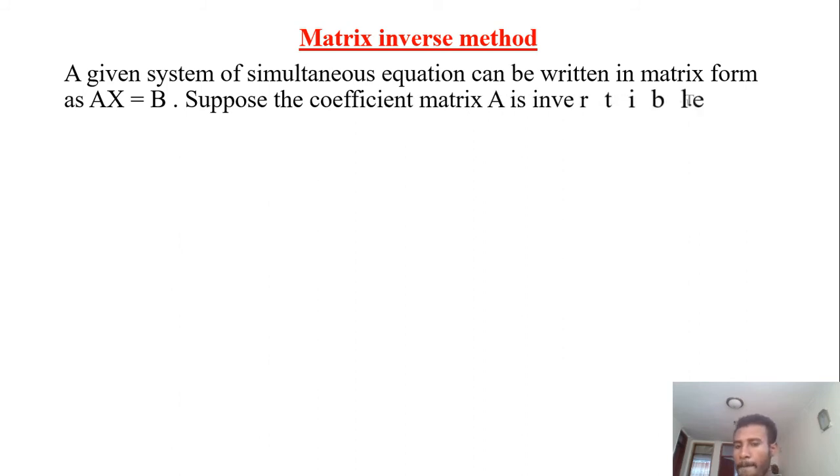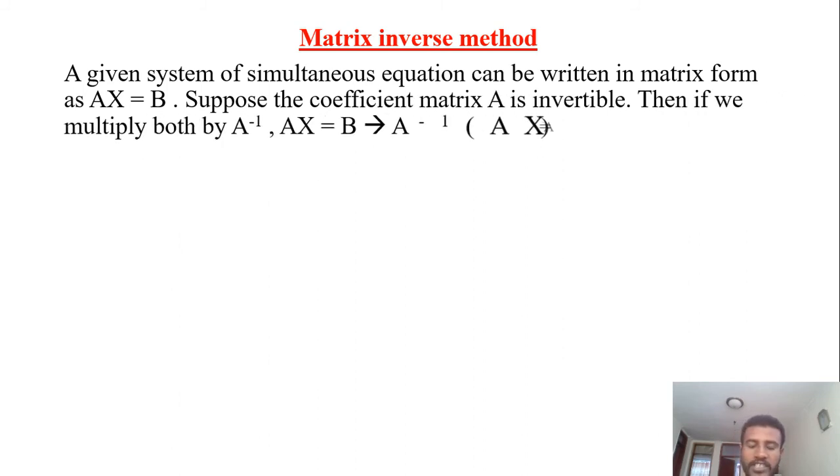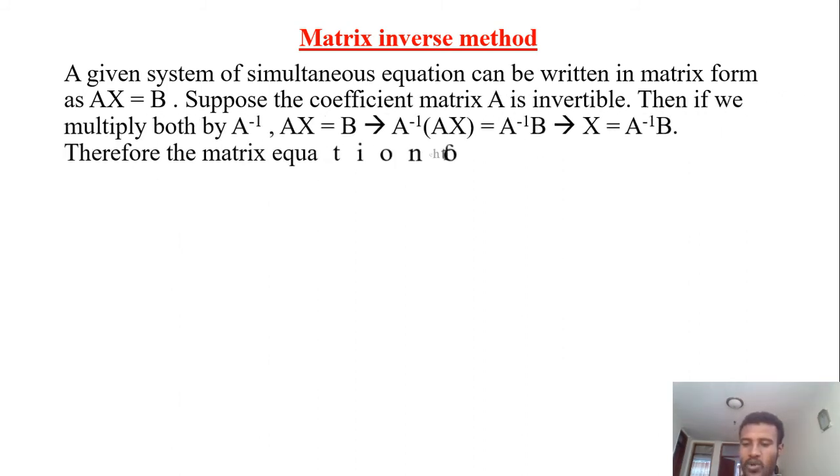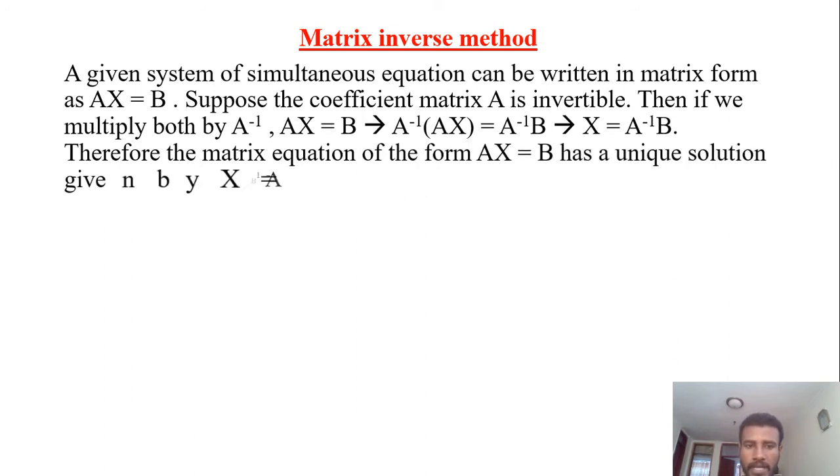A given system of simultaneous equations can be written in matrix form as AX = B. Suppose the coefficient matrix A is invertible. If the coefficient matrix A is invertible, we can write the system of linear equations as AX = B.